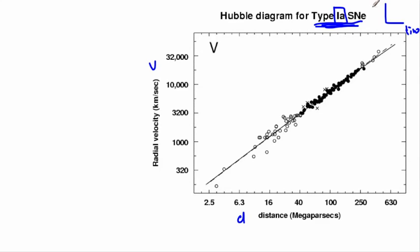We know that type 1a supernovas, if this is time, and this here is the apparent brightness, we know that they all basically do something like this. The brightness goes up, and then it sort of goes down. And it turns out, it's thought that all type 1a supernovas have roughly the same maximum intensity.